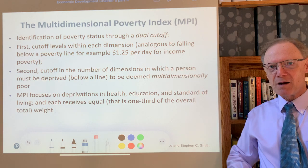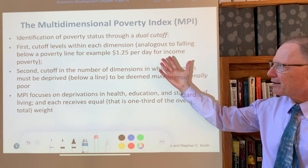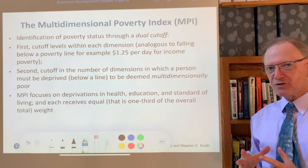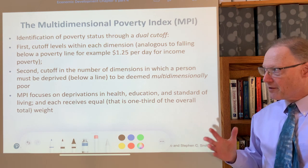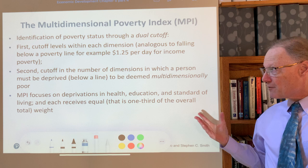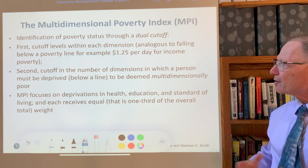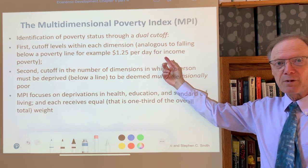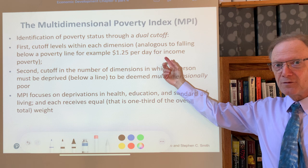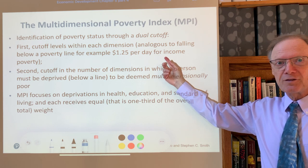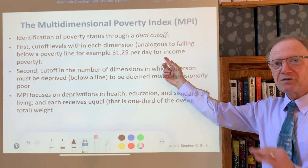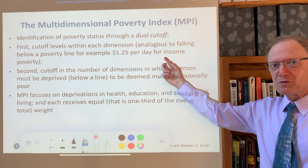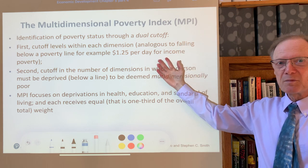Whenever thinking about poverty we always first look at the identification of who is poor. This is essential because of the focus principle: a measure of poverty must focus on those who are poor, and this applies for multidimensional poverty analysis every bit as much as it does for income poverty analysis. First there are cutoff levels within each dimension, just as with the income dimension — we had a poverty line such as $1.25 or $1.90, and those whose incomes fell below that line were identified as being poor.